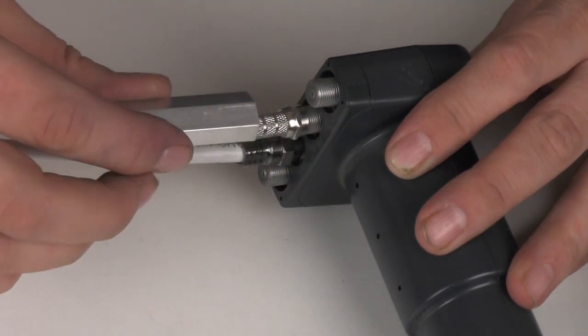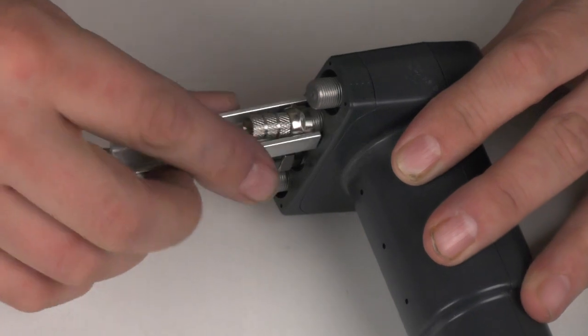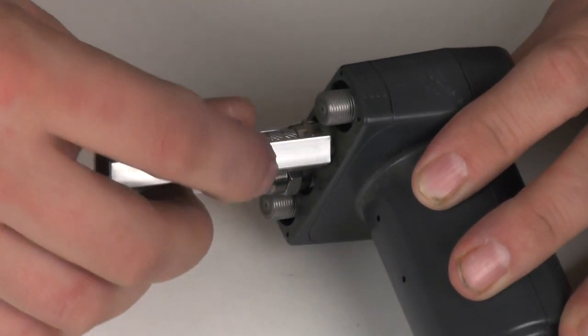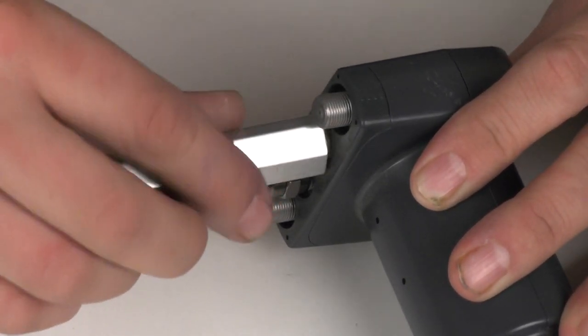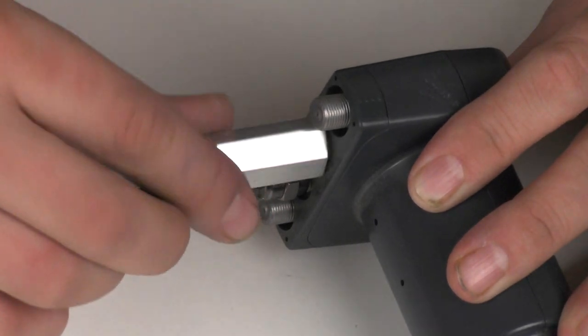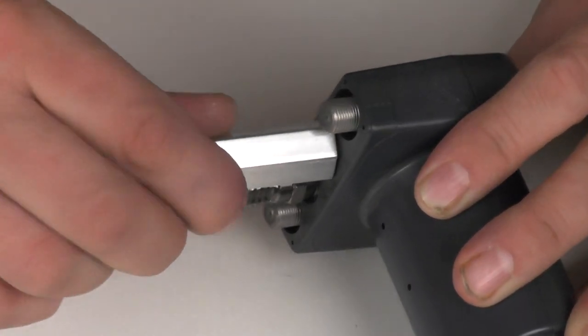And then you can take the tool, slide it over, and start turning round. And again, it's just the nut that's being turned round. The body of the F-Connector won't turn round when you have a cable connected. And we can get this turned right round and get it very, very tight.